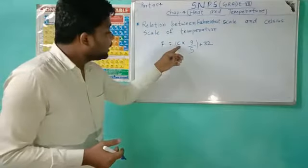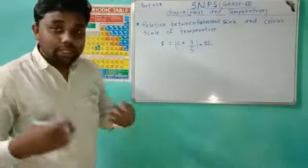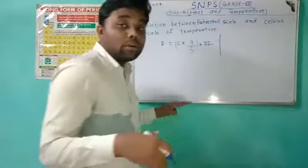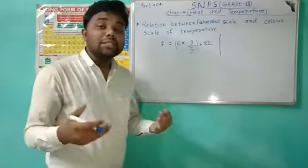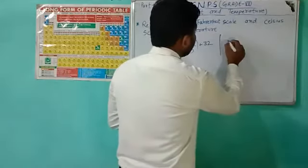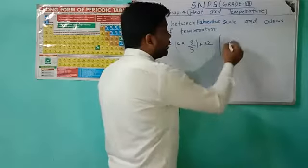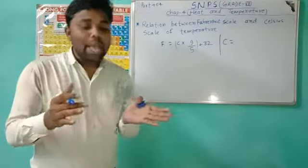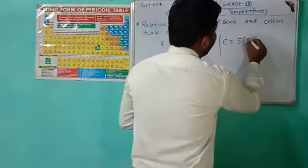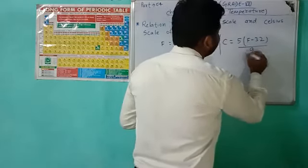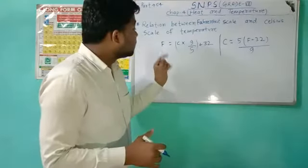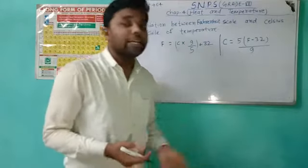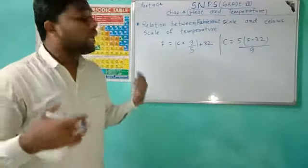We can also do the vice versa — we can get degree Celsius from degree Fahrenheit. The formula is: C = 5 × (F − 32) / 9. So this is all about the formulas — we can calculate degree Fahrenheit or degree Celsius depending on what we have.